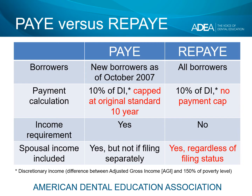Let's take a look at some of the key differences between Pays As You Earn and Revised Pays As You Earn. REPAY is available to all borrowers regardless of when you first started borrowing. PAY is a bit more restrictive — it is only available to new borrowers as of October 2007. So if you are an older borrower and you had some federal debt before October 2007, you cannot even apply for PAY unless you paid that debt off in full before you took out another loan after that date.